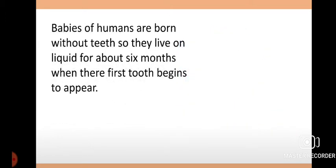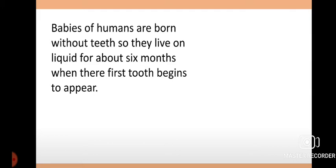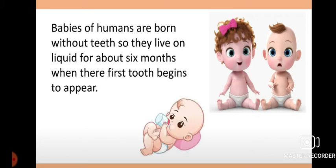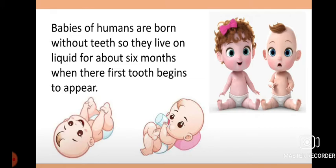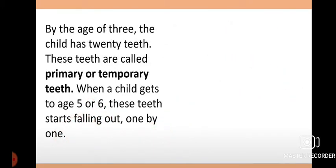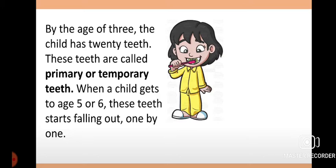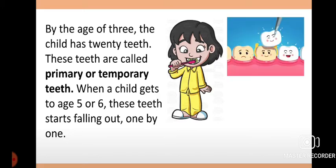Babies of humans are born without teeth, so when they are born they don't have teeth. As a result, for about six months they only survive on liquids. Then gradually the teeth start appearing, and by the age of three years, children generally have 20 teeth. These teeth are known as the primary teeth, also called temporary teeth, because this tooth structure does not remain forever — it stays only for some time.